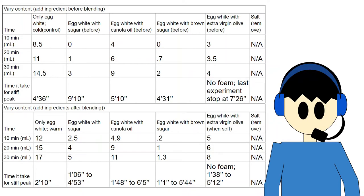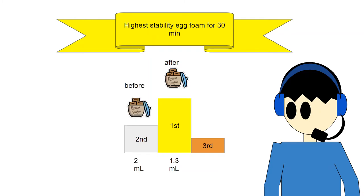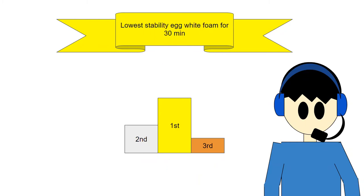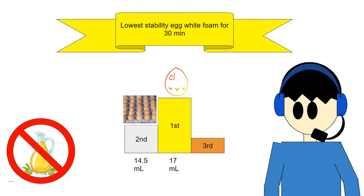Here are the results. The highest stability egg foam at 30 minutes goes to brown sugar after mixing with 1.3 milliliters. Second place goes to brown sugar before mixing with 2 milliliters. Third place has white sugar before mixing with 3 milliliters. The lowest stability — excluding olive oil since it did not create egg foam — goes to warm egg with 17 milliliters, cold egg with 14.5 milliliters, and canola oil after mixing with 11 milliliters.